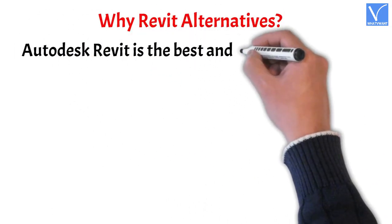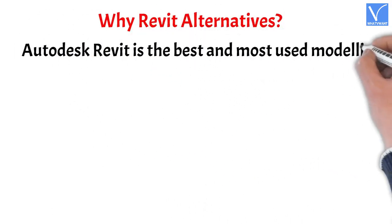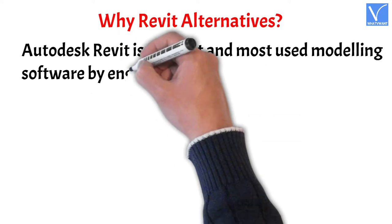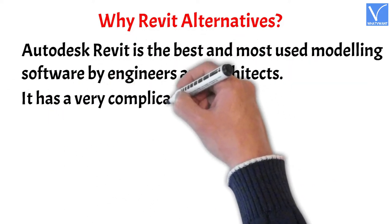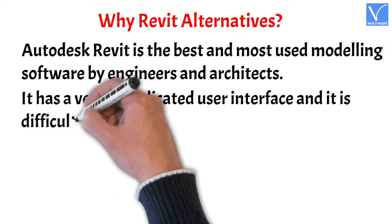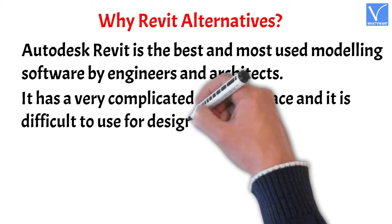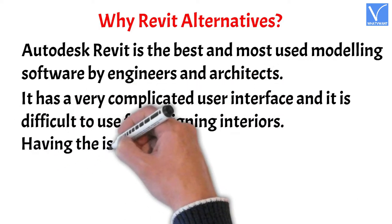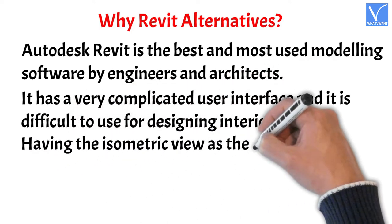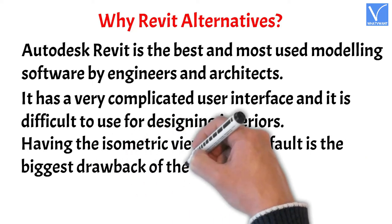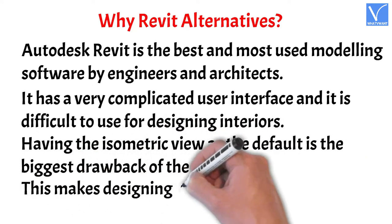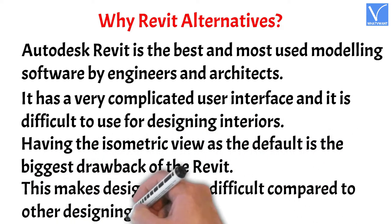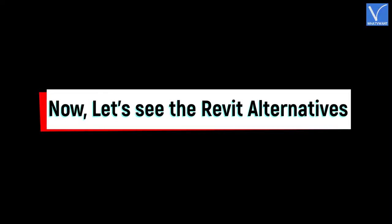Why Revit Alternatives? Autodesk Revit is the best and most used modeling software by engineers and architects. However, it has a very complicated user interface and it is difficult to use for designing interiors. Having the isometric view as the default is the biggest drawback of Revit, making designing very difficult compared to other designing software. Now let's see the Revit alternatives.